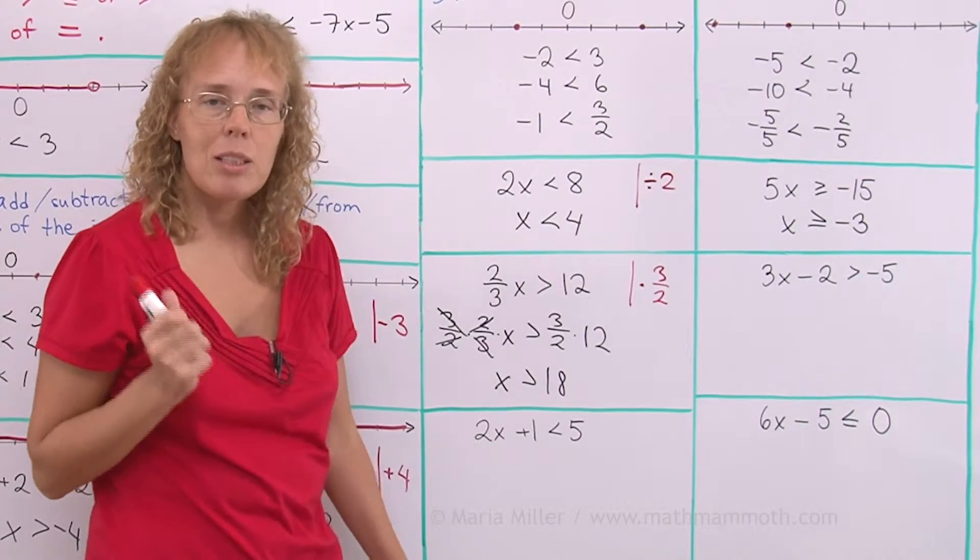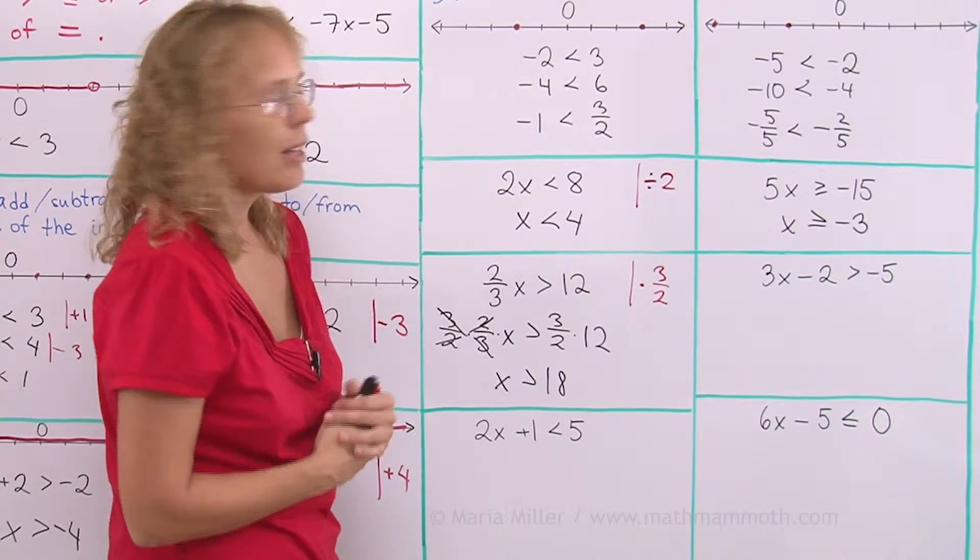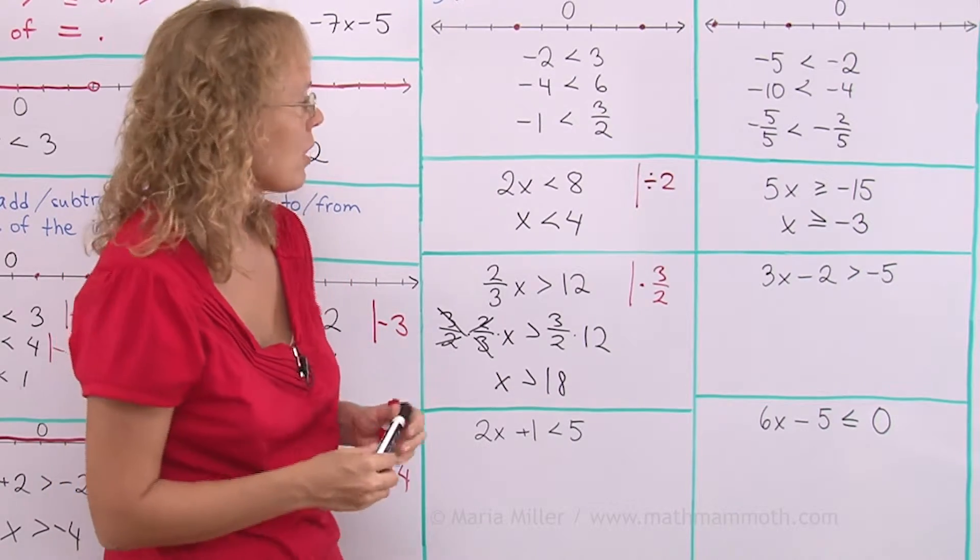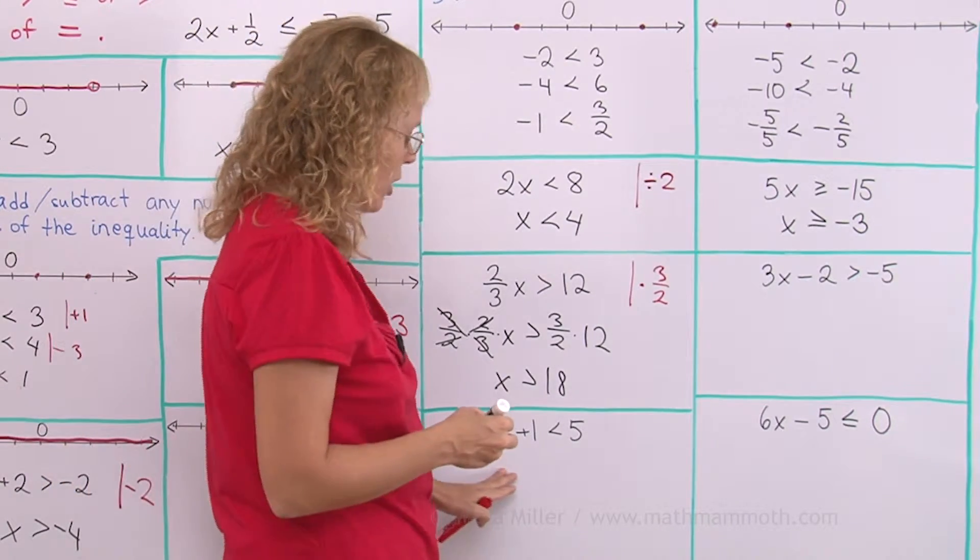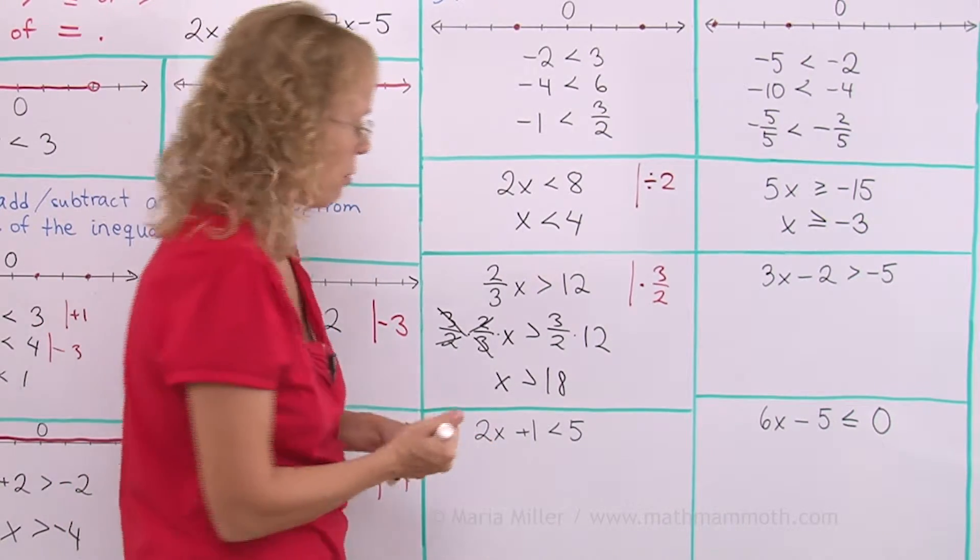Lastly, we will look at inequalities where you need to use two steps to solve them. And they work just exactly like the two-step equations you have already solved. Let's take, for example, this one. 2x plus 1 less than 5.